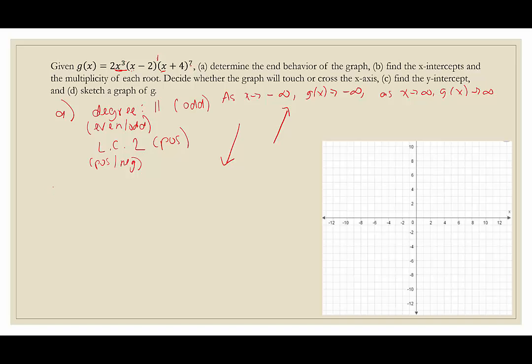For part B, we want to find the x-intercepts — that's when g of x equals 0. Because it's already in factored form, we look at each factor and determine what makes it equal 0. We also find the multiplicity. What we really care about with the multiplicity is whether it's even or odd. If it's even, the graph will touch the axis and turn back around. If it's odd, it will cross.